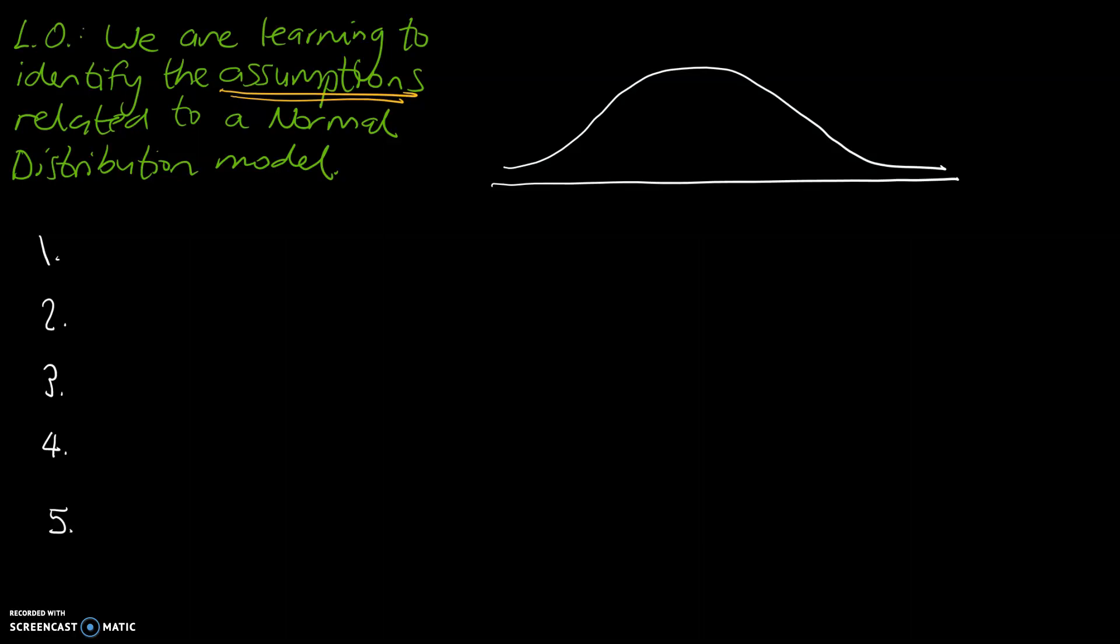So looking at our graph, we can see one peak that's typically in the middle of our graph, and our peak is just there. So the first assumption, one peak means our data must be unimodal. If it's not unimodal, then it's not a normal distribution curve.